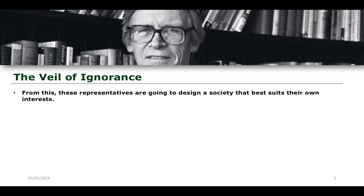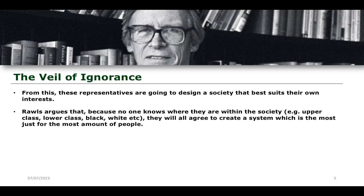From these different situations, we've constructed this thought experiment. The representatives are now going to design a society that will best suit their interests. What Rawls argues is that because nobody knows whereabouts they are within society — they don't know if they're upper class, lower class, black, white, etc. — they will agree to create a system that is the most just for the most amount of people, because they're acting in their best interest. If you don't know whereabouts you are in that society, it is in your best interest to construct a society that best serves the interests of the most amount of people — to hedge your bets, to get to a position where, when you do get back your information about where you are in society, you'll be happy, because this society regardless of where you are within it is going to serve the best interest for the most amount of people. So even if you're really poor or from a minority ethnic background, it doesn't matter, because you've constructed a society that is to the benefit of these people as well as to the benefit of everybody else.